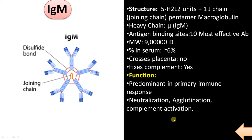Other functions include neutralization, agglutination, and complement activation. This monomer can function as a B cell receptor. Along with IgG, it mediates type 2 hypersensitivity.